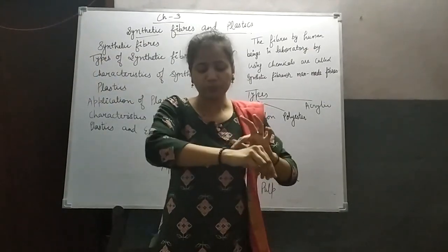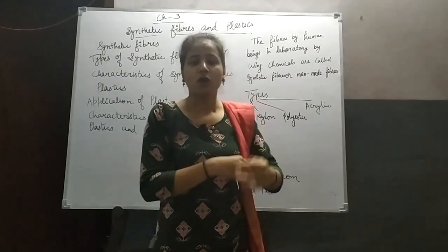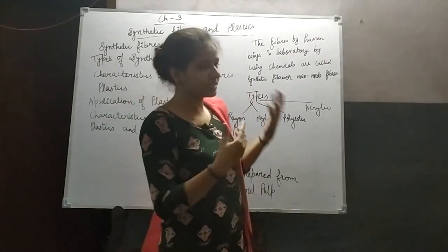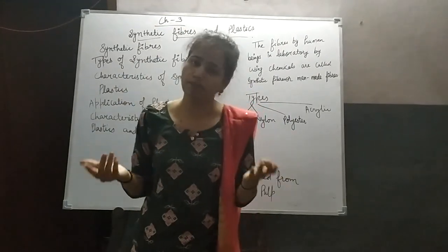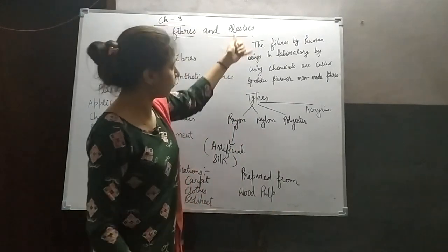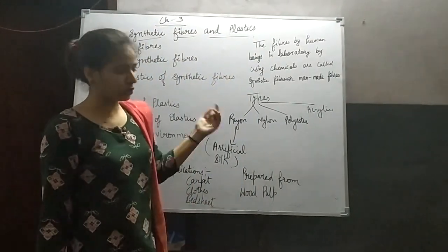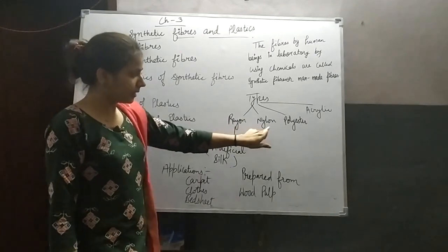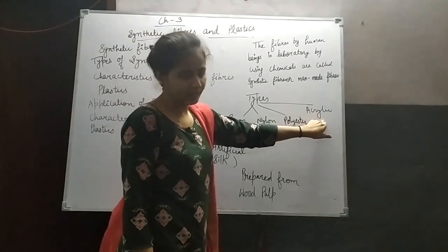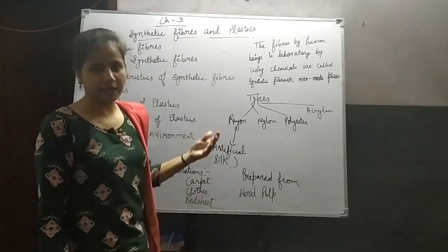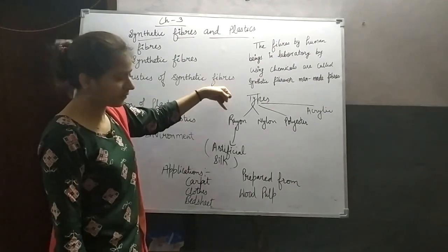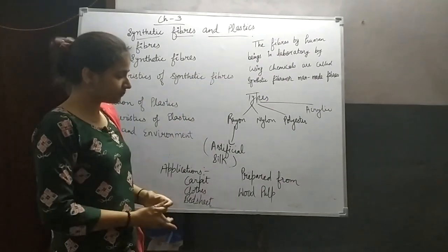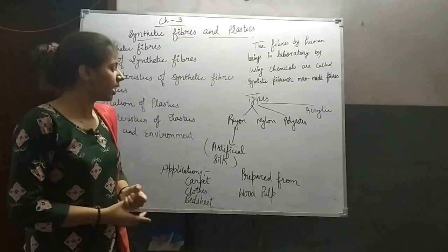Synthetic fibers are actually made of polymers. Synthetic fibers also have different types: rayon, nylon, polyester, and acrylic. We will study all of these. First we will study rayon.